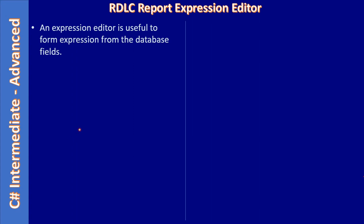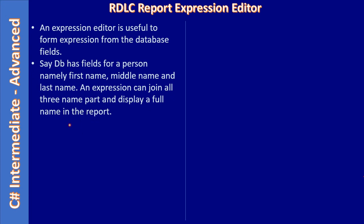Now we will use the expression editor once again, and this time we will use the immediate if statement to perform background and foreground color changes. For example, say a database has fields for a person — first name, middle name, and last name. You can form an expression to join these three columns from the database and display that as a full name — the same way one can combine database fields.